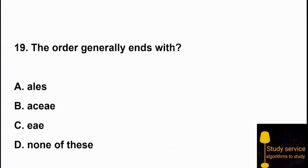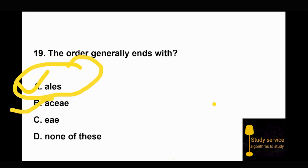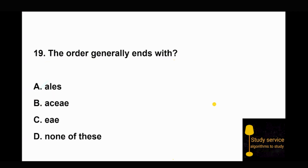Question 19: The order generally ends with. Option A: ALES. Option B: AC. Option C: A or G. When we do classification, the order always ends with ALES, and the family always ends with AC. So Option A is the right answer — the order always ends with ALES.